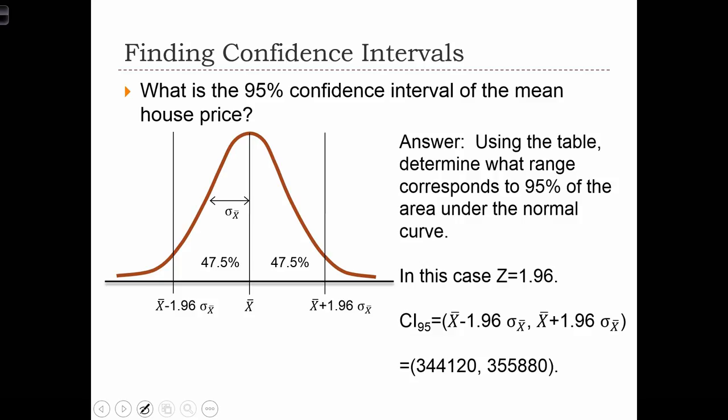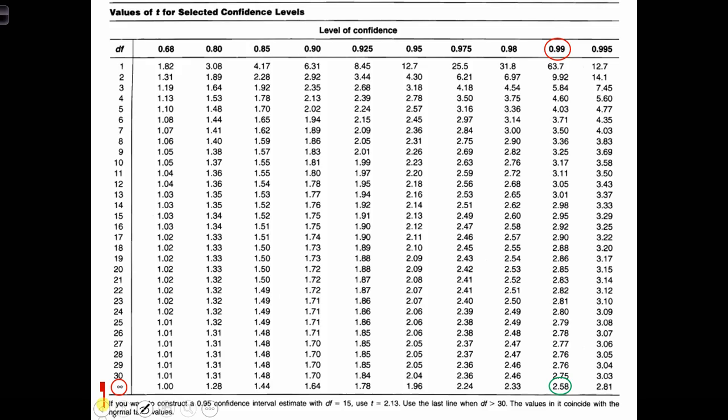The same thing goes for the 95% case. We're going to use this table over here. Now we'll use this column, the 95% column. Go down to the row. That's a t distribution with infinite degrees of freedom. In other words, that's the normal distribution. And we find that the z-score is 1.96.